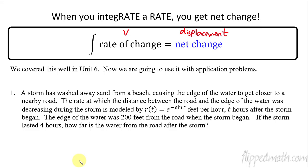So let's take a look at this first problem. We have a storm that's going through and washing away sand on a beach. It's causing the edge of the water to get closer to a nearby road. So the distance between the road and the water is getting smaller and smaller. The rate at which it's decreasing is modeled by this. Now the key here is rate. So we're given the rate at which this is decreasing, the distance between the road and the edge of the water. T hours after the storm began, the edge of the water starts off 200 feet from the road. If the storm lasted four hours, how far is the water from the road after the storm?